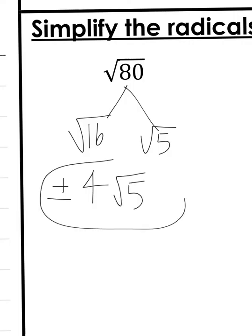That's what I mean by one factor is square rootable and the other one is not square rootable, so to speak — it doesn't make a perfect square root. You can type in square root of 5 and get a number, but you'd have to round it. So this is how we simplify the square root of 80.